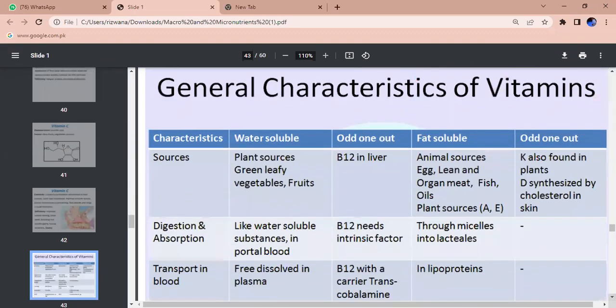What is the source of vitamins? What are our sources? Plant source - green leafy vegetables, fruits, nuts. Animal source - lean and organ meats, fish oils. Vitamin K also is synthesized by cholesterol in skin.